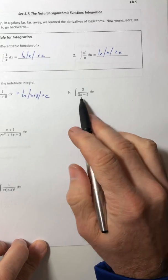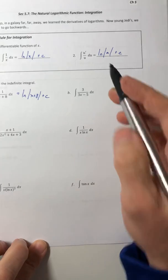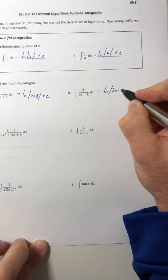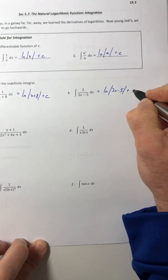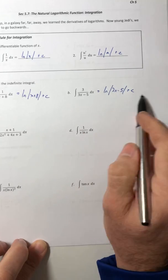Part b. The derivative of 3x minus 5, that is 3. So it follows the format we want. So it's ln of the absolute value of that denominator, plus c.